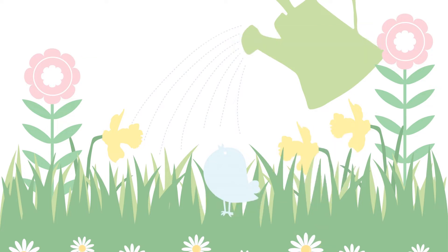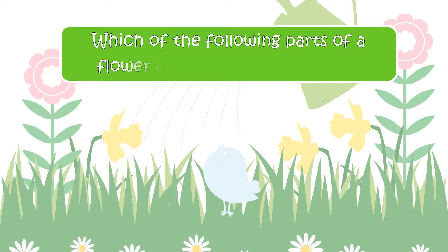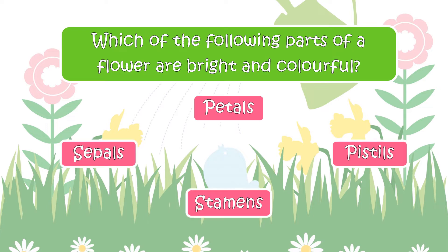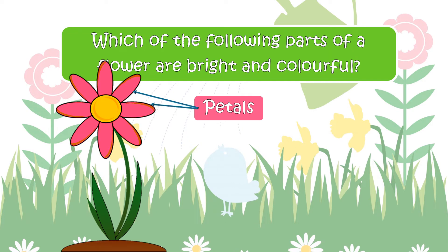Here is the next question. Which of the following parts of a flower are bright and colorful? Your options are Sepals, Petals, Pistils, or Stamens. The right answer is Petals. Petals make the flower look attractive. Their function is to attract bees and butterflies, which help in pollination.